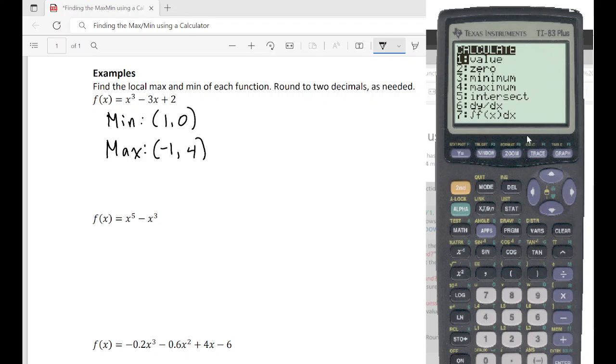So now we can go in and find our min. So our minimum is going to be over here. Right about here. So we're going to go a few spots to the left. Make sure it's definitely to the left. Hit enter. Go back. And then go a few spots to the right. Enter. And then enter again.